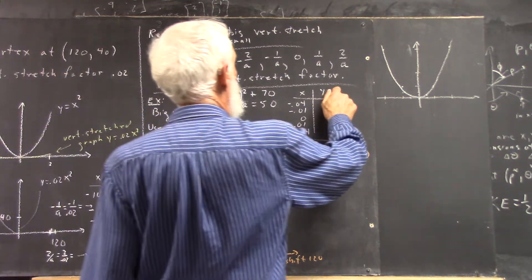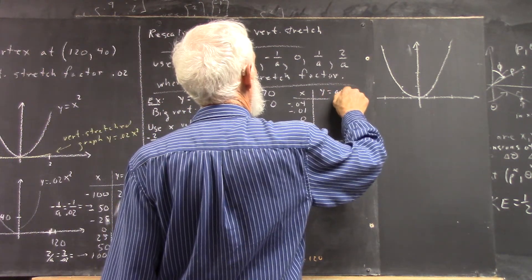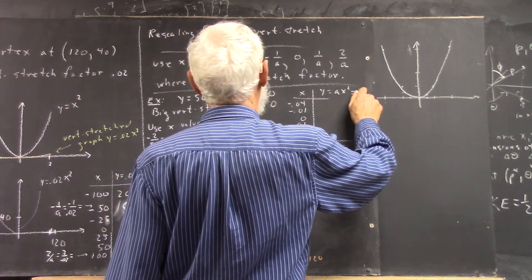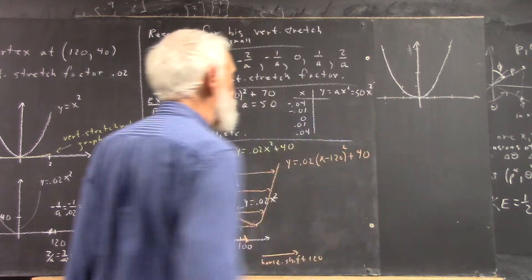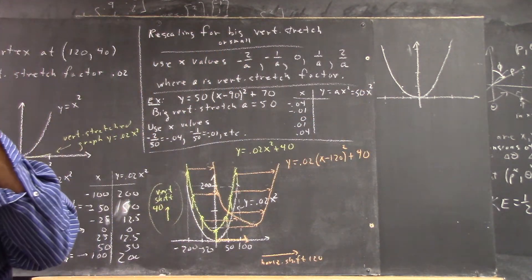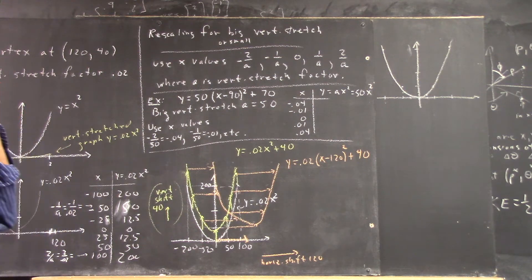Now we want to do y equals A x squared, then that would be 50 x squared, right?